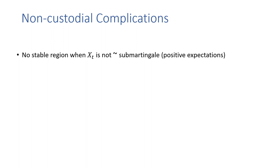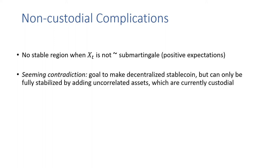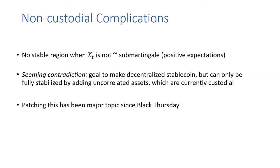This implies some complications for non-custodial stablecoins: these deleveraging problems exist, and in particular there's no stable region in this model when the collateral price process is not a submartingale. People really need to expect the collateral price is going to increase for the whole system's incentives to work properly. This leads to a seeming contradiction: the goal is to make a decentralized stablecoin, but this can only be fully stabilized by adding uncorrelated assets, which are currently all custodial. Patching this has been a major topic since Black Thursday.